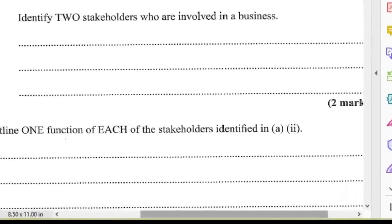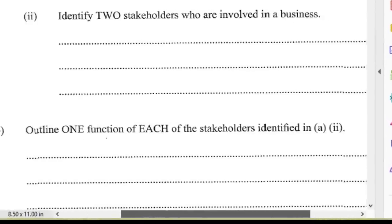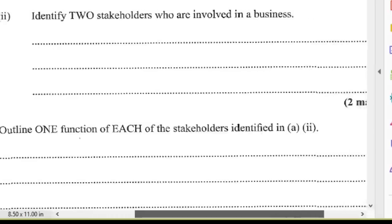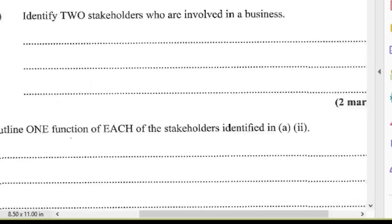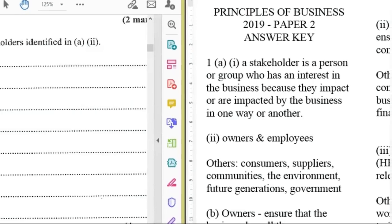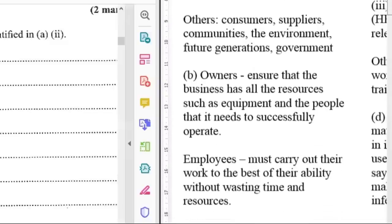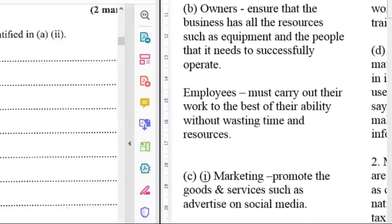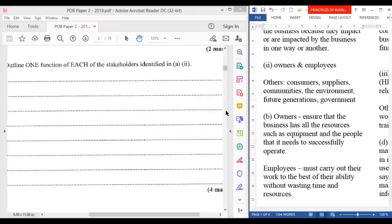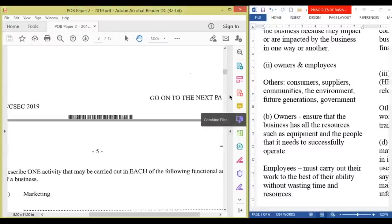Question B says outline one function of each of the stakeholders identified in A2. The owner is to ensure that the business has all the resources such as equipment and the right people that it needs to successfully operate. The function of the employee is to ensure that they carry out their work to the best of their ability without wasting time and resources.